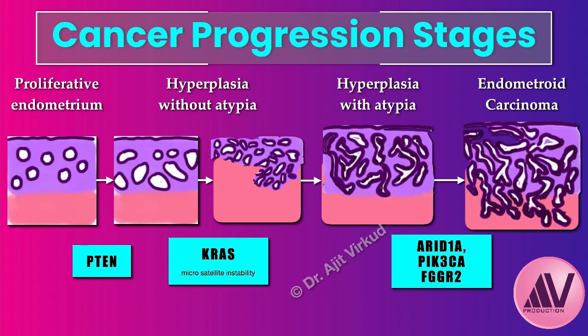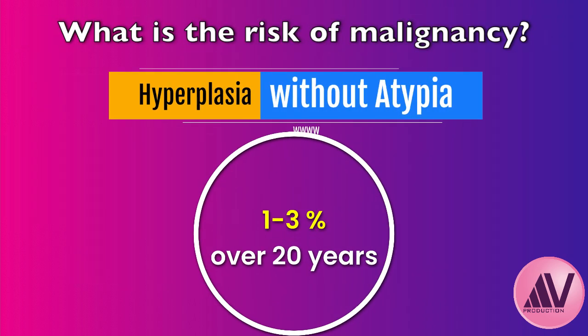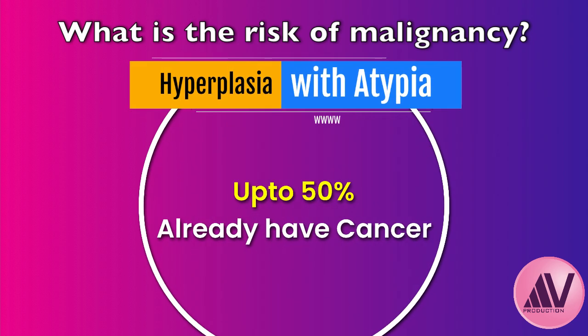The distinction with or without atypia is crucial because cancer risk differs hugely. Progression may start with proliferative endometrium, then hyperplasia without atypia — often involving a PTEN mutation — then hyperplasia with atypia, then endometrioid carcinoma. For hyperplasia without atypia, the risk of progressing to cancer over 20 years is around 1 to 3%. For hyperplasia with atypia, up to 50% of women who then have a hysterectomy are found to already have an underlying cancer present.